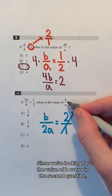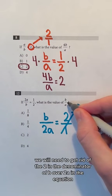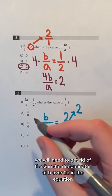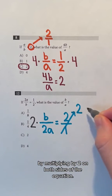Since we're looking for the value of B over A in the second question, we will need to get rid of the 2 in the denominator of B over 2A in the equation by multiplying by 2 on both sides of the equation.